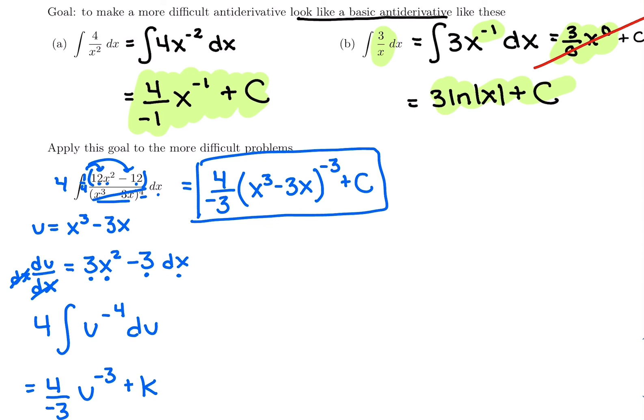Applying those basic antiderivative rules to something more complicated means making u the denominator, raising it to a negative power. Then you can either add 1, unless you get 0, then you would write ln of u. But this one, we could add 1 to negative 4 to get negative 3, divide by it, raise it as our new power, and then switch back from u's to x's.